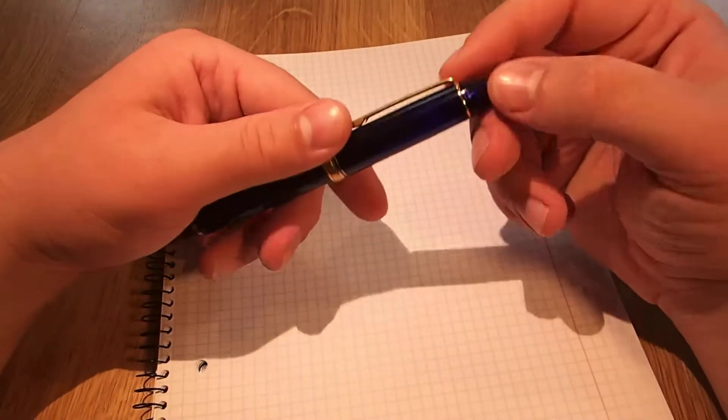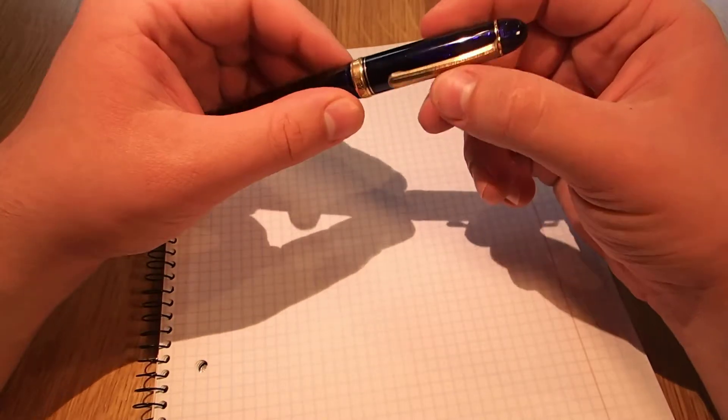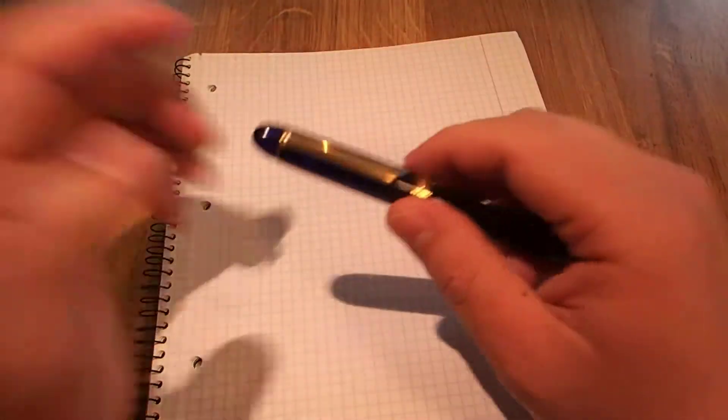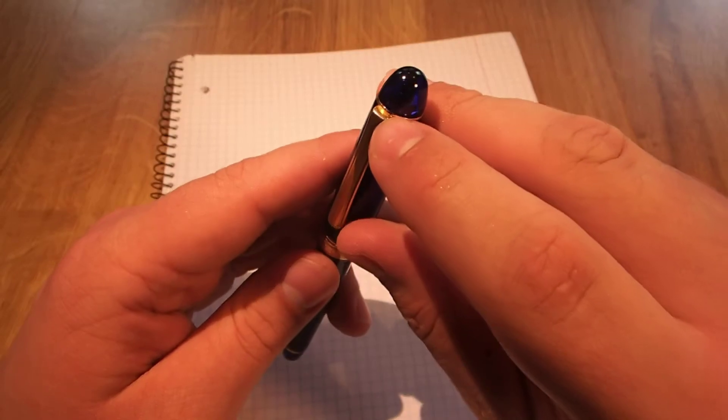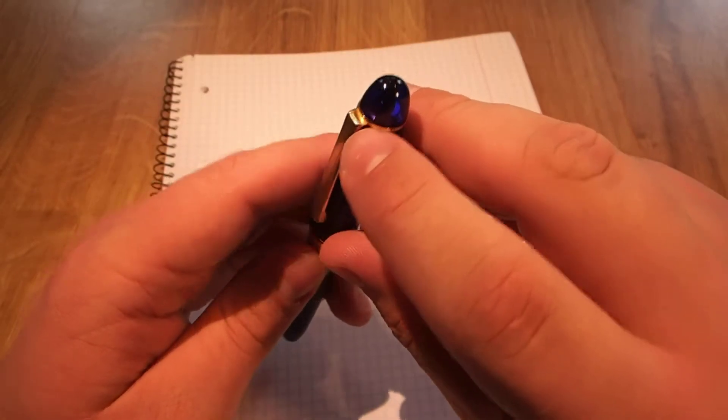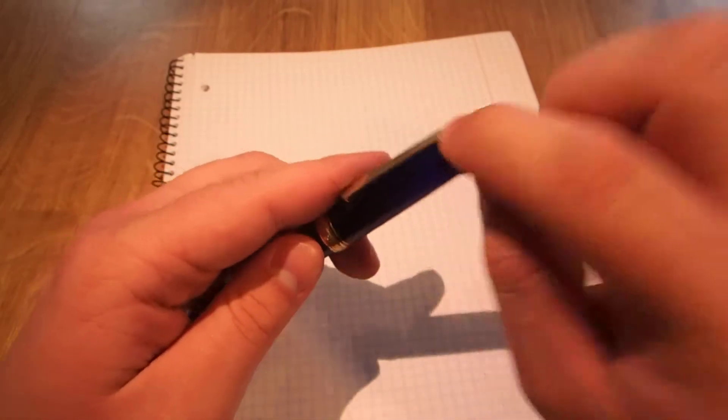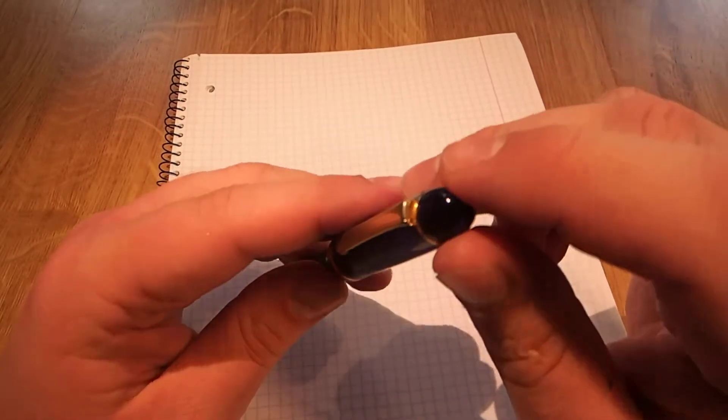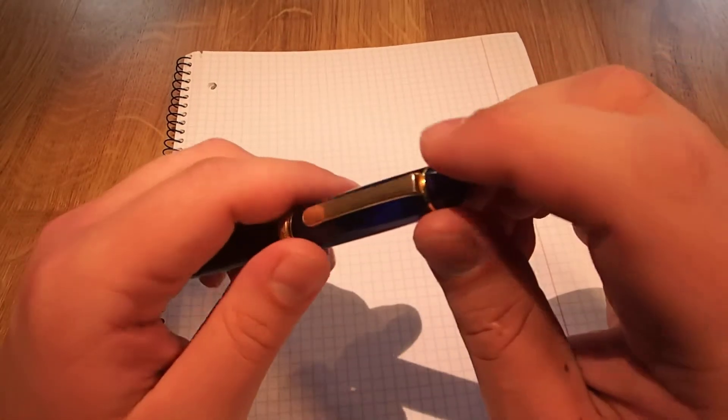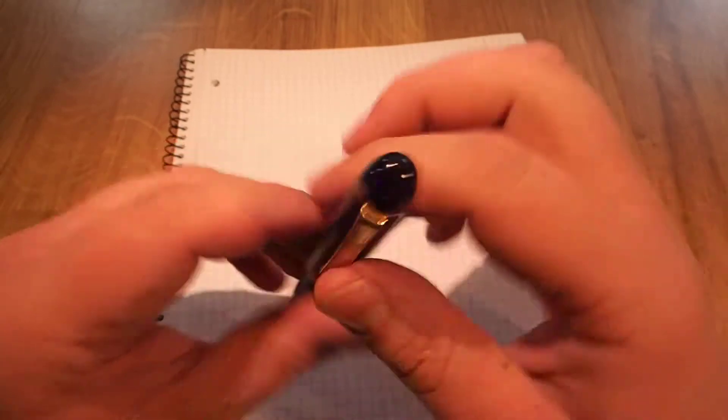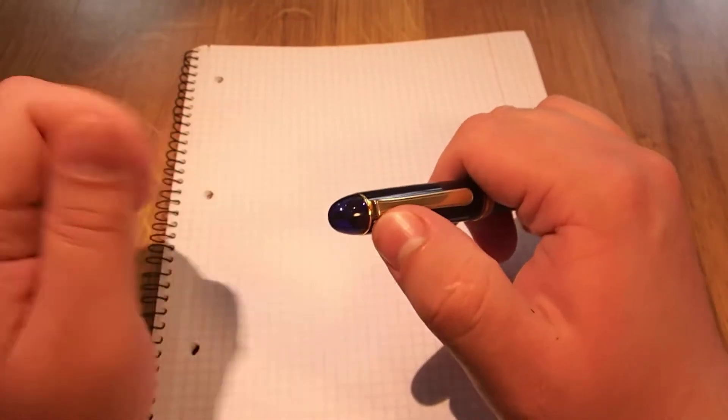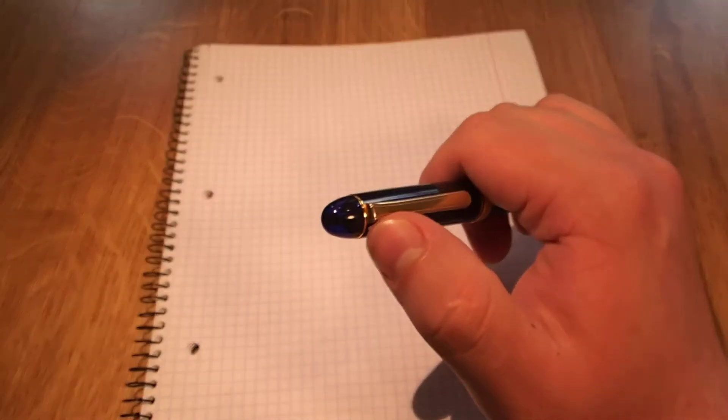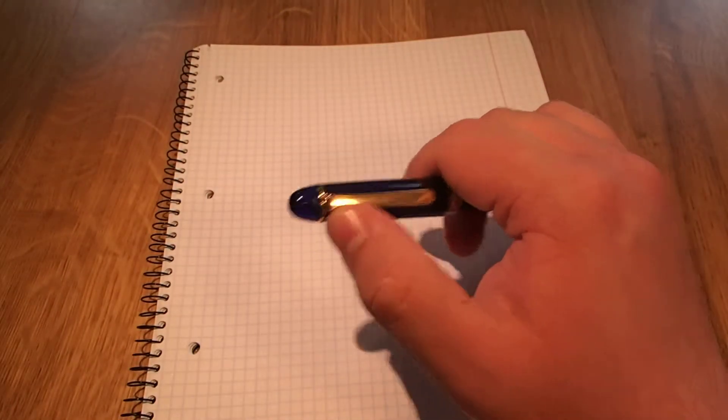But the gold is wearing off out of the top side of the clip right here at the angle. I don't know if you can see it, it's hard to see. But the gold plating is wearing off out of the angle of the clip.